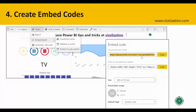You have two options. You can select the link, copy it, and paste it to your social media accounts or share it via email — use the first option for that. If you own a website and want to embed the content there, select the second option. For this tutorial, we'll use the first option.